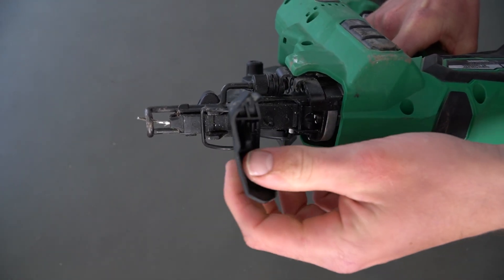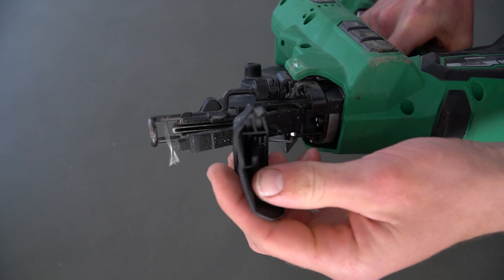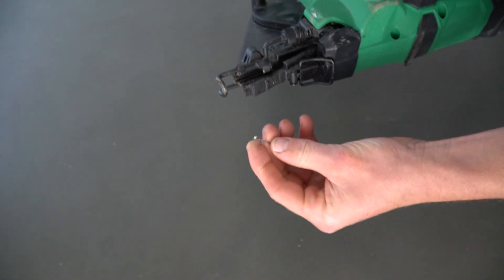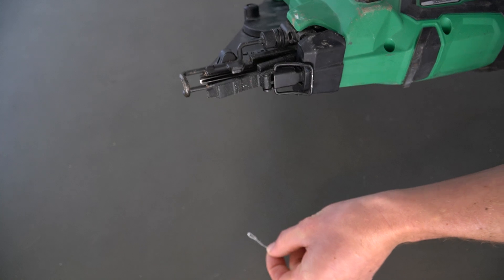With that up, we'll push it forward and this clip is going to come off the front here. We can pull that up and that releases the top of the gun. You can see there how easy that is. That jammed nail fell out.